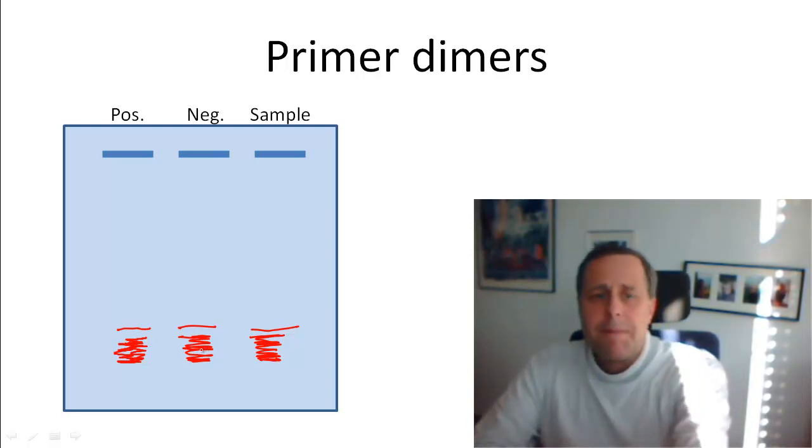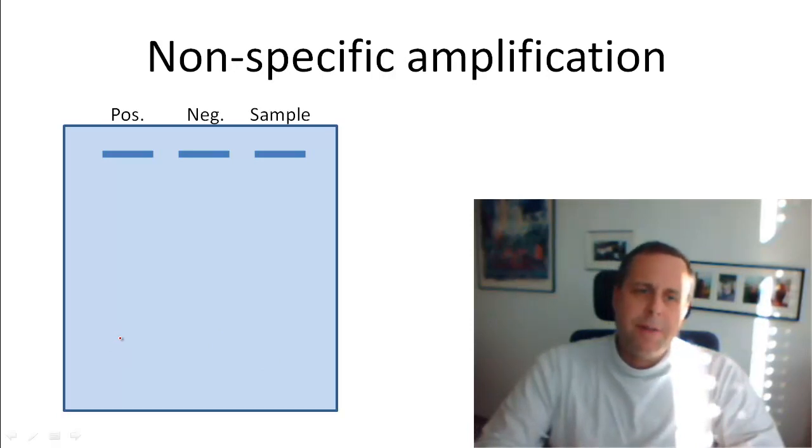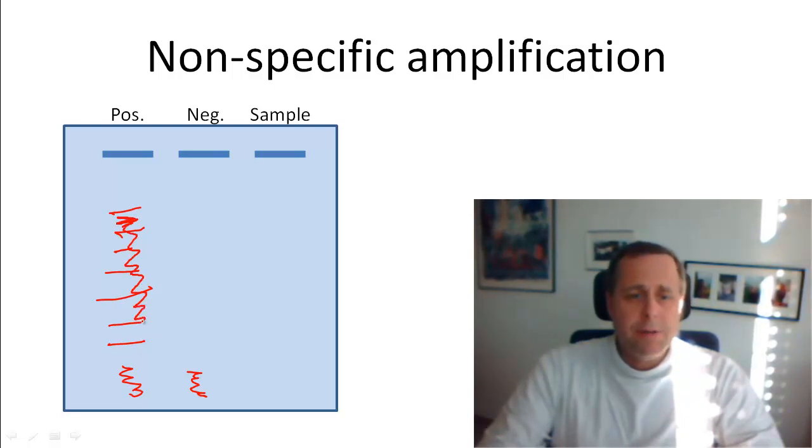Another kind of trouble that can come up is that you not only get the primer dimers, but you get all kinds of nonspecific amplification products. Maybe you don't get them in your negative samples. In your negative sample, you only get the primers themselves, but in the positive control you get several bands, something like that. And sometimes the bands are so numerous that it even looks like a smear that goes across the entire gel.